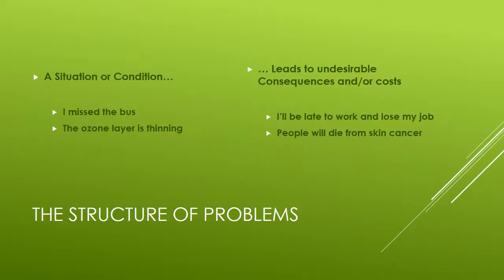So what is the basic structure of a problem? We have a situation or condition that leads to undesirable consequences or costs. For example, I miss the bus, which leads to me being late to work and losing my job. The ozone layer is thinning, meaning people will die from skin cancer. So we've got a situation and the cost of it — that's the basic structure of any problem.